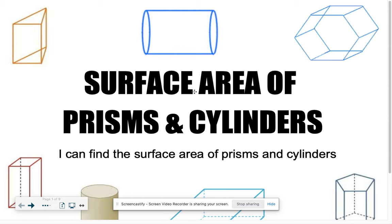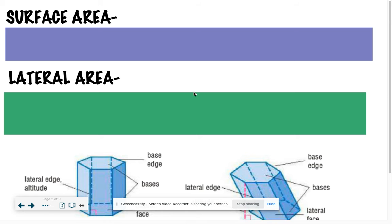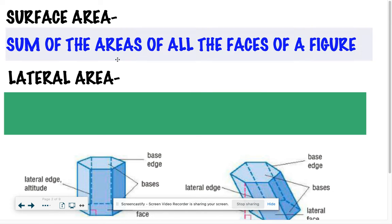It's kind of exactly what it sounds like - you're going to find the area of all the different surfaces of your figure and add them together. So a formal definition for surface area is the sum of the areas of all the faces of a figure. The faces are just like the sides, so you're going to find each individual side and add them all together.